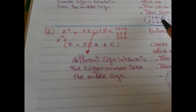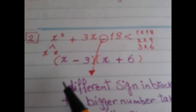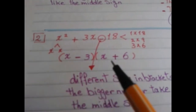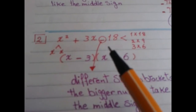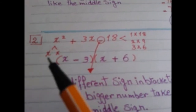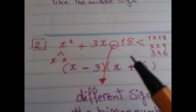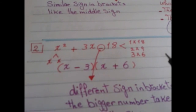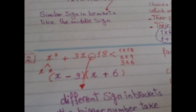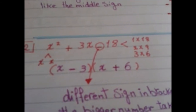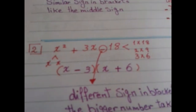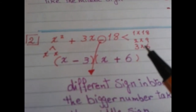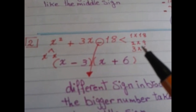Let's study Example 2: x squared plus 3x minus 18. Open two brackets. Factorize x squared as x times x. Then consider the factors of 18: 1 times 18, 2 times 9, and 3 times 6. All multiply to give 18.